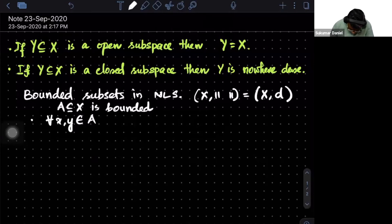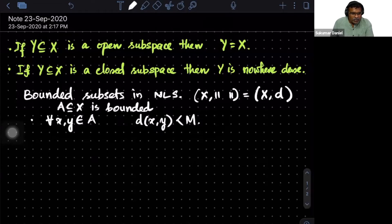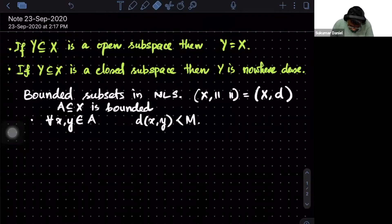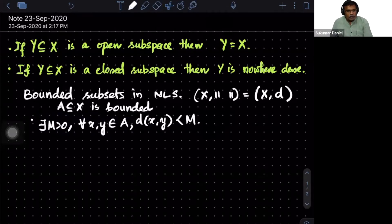One definition: for all x and y in A, we want the distance between x and y to be less than M for some M. But M must be given first — there exists M positive such that that works for all x and y. You should give me the M before specifying x and y.